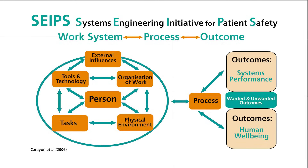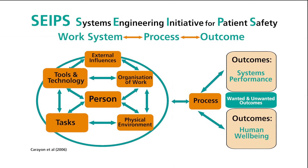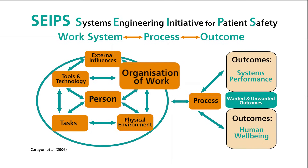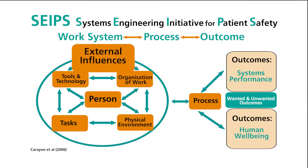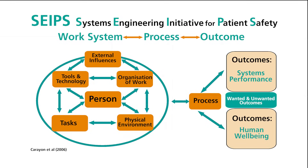The left side of the model shows a complex adaptive socio-technical work system with six interacting components: person, tasks, tools and technology, organisation of work, physical environment, and external influences.